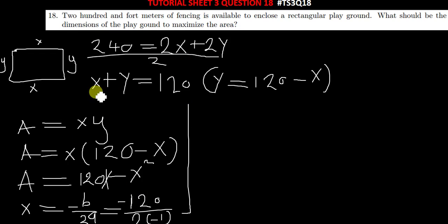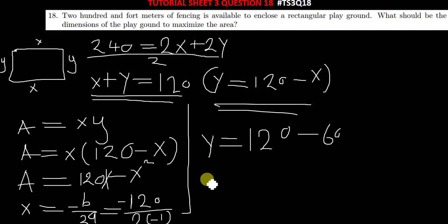Instead of getting that part, let us just use this. The value of y at maximum will be equal to 120 minus 60, which will give you 60 as well.